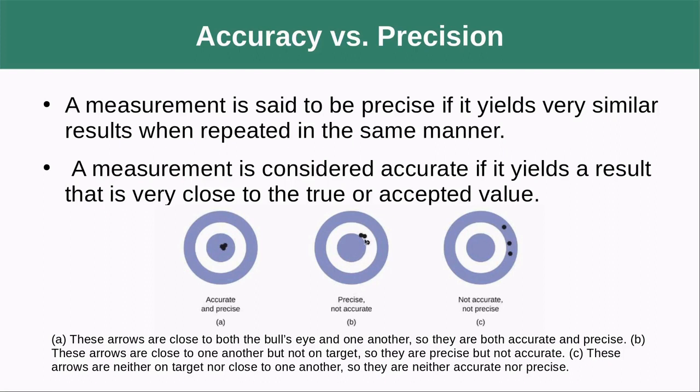Over here, you keep hitting the same spot. It's not close to the actual value, but you keep hitting the same spot. You're still being precise. You're still repeatedly being able to hit the same spot. It's just not the one that you're looking for. It's not accurate. Where over here, you're far away from being accurate and you're not able to repeat it. So if you can't repeat it, then you're not being precise either.